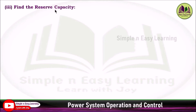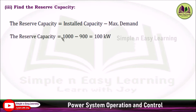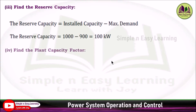Find the reserve capacity. Reserve capacity equals installed capacity minus maximum demand. Installed capacity is 1000 kilowatt minus 900 kilowatt maximum demand, giving 100 kilowatt reserve capacity.